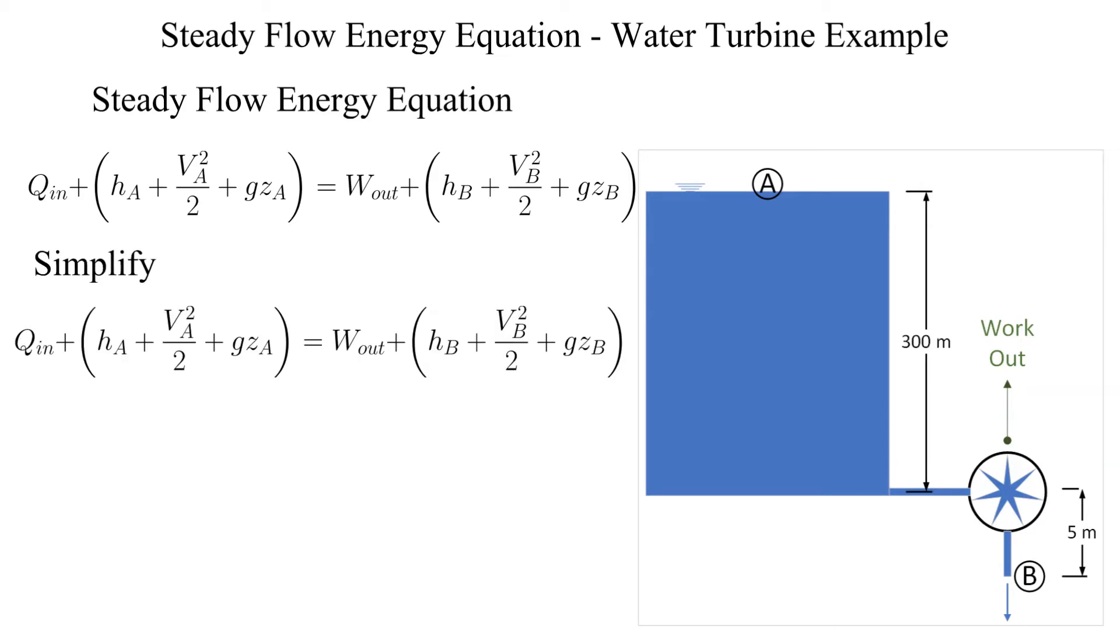Simplifying, there is no heat transfer into the flowing system. The velocity at point alpha is negligible due to the large tank assumption. The velocity at point bravo is given. Enthalpies at point alpha and point bravo cancel since we are considering a perfect turbine and the pressures are the same at both locations.